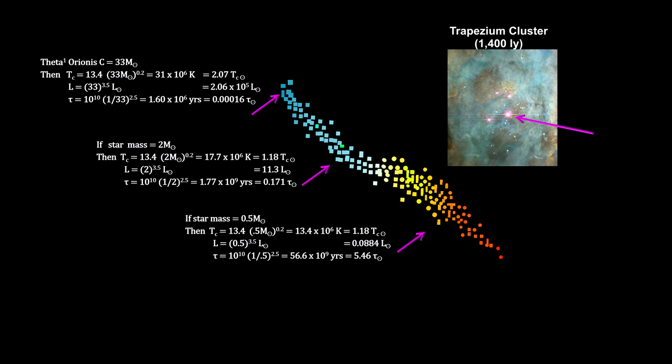At the extremes, we have theta-1 Orionis C in the Trapezium cluster at 33 times the mass of the sun. Its luminosity is over 200,000 times greater than the sun, and it won't last more than a few million years.